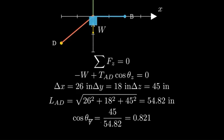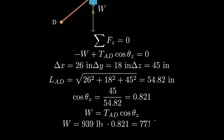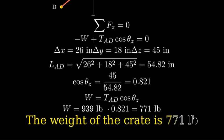Now, we can solve for the weight. The weight equals the tension in cable AD times the vertical direction cosine. Plugging in our values, 939 pounds times 0.821 equals 771 pounds. Therefore, the weight of the crate is 771 pounds.